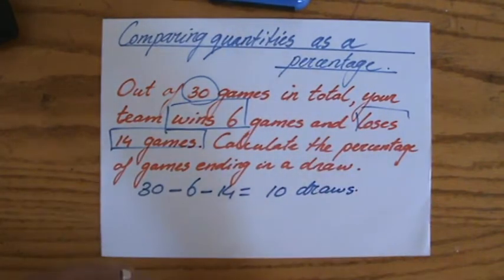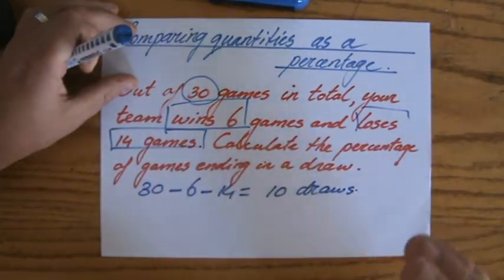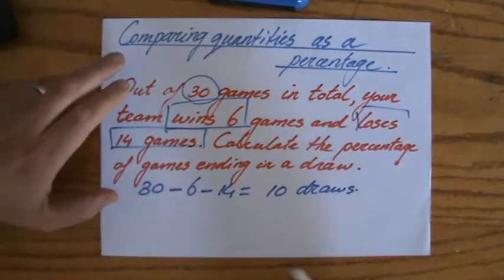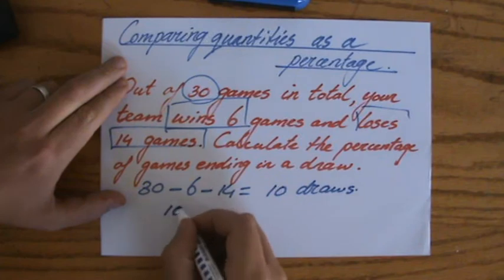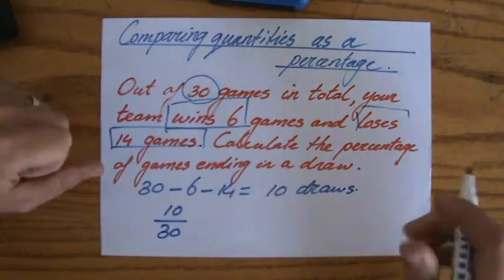The question is not how many times did you draw, no the question is what is the percentage of games ending in a draw? And as I've showed you in my previous videos, you do that amount over, in this case 30, the amount of games in total.